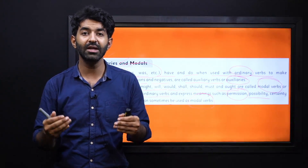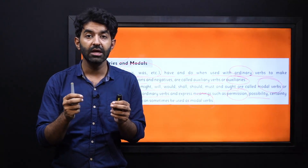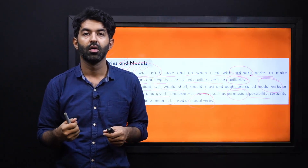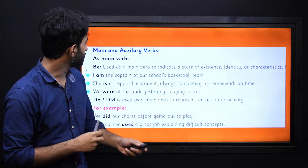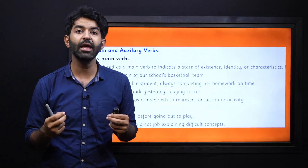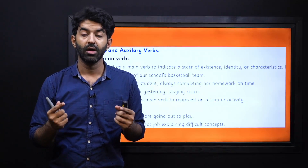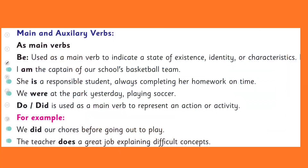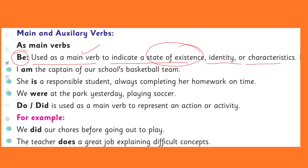Be has different forms. It gets a little complicated, students, but you have to memorize each and every function of am, is, was, and were, etc. Now let's see how they work. If you want to use them as main verbs — there is the main verb and also the helping verb that helps the main verb. Let's talk about the main verbs. Be, do, and have are the three primary auxiliaries. Let's talk about 'be' here. It is used as a main verb to indicate a state of existence, identity, or characteristics.